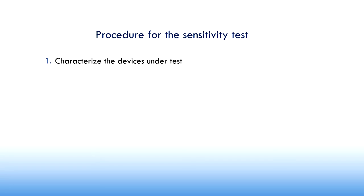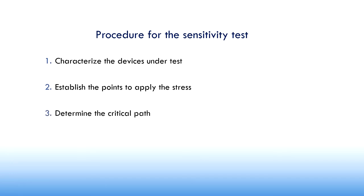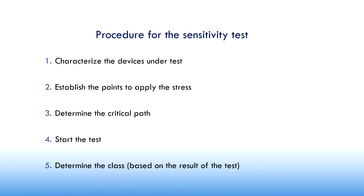What is the procedure to follow? First, we have to characterize the devices under test in order to know what is the correct or standard working. Second, we have to establish the points where we are going to apply the stress. Third, we determine the critical path. Fourth, we start testing, applying the stress. Fifth, we determine the class based on the lowest voltage that has damaged the component.